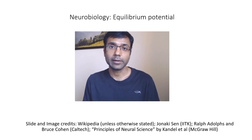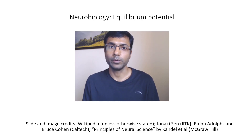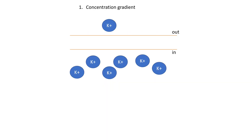These driving forces are the chemical gradient and the electrical gradient. Let us try to understand how these two gradients work together and determine the membrane potential. Let's start by looking at the concentration gradient — these gradients are going to be different for different ions. Let's look at potassium ions in particular, K+. We know that potassium ions are more abundant inside compared to outside, so by the concentration gradient, these ions would like to move outside.